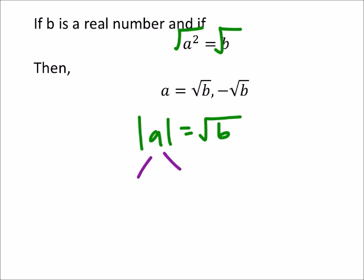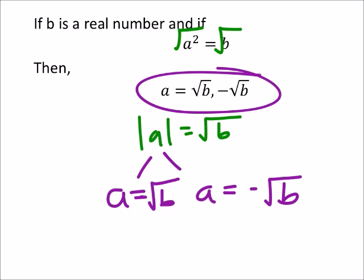But remember, we can kind of split this up so that a is the positive square root of b, but also that a is the negative square root of b. That's pretty much what this is saying right here. Just keep in mind on this thing, this negative is not in the square root. Otherwise it gives us an imaginary number, which is okay now.